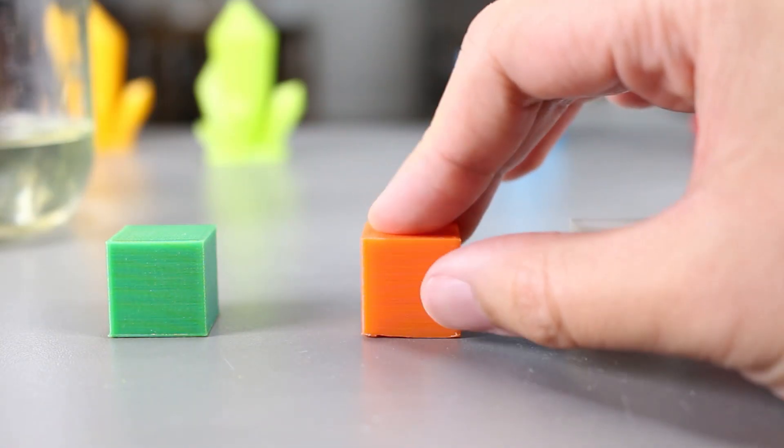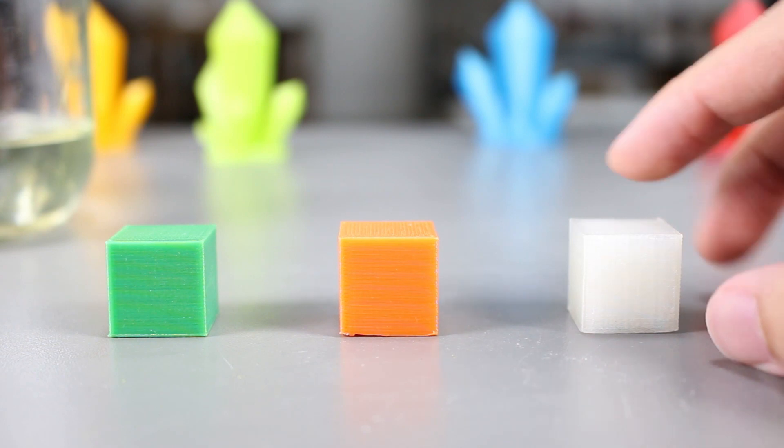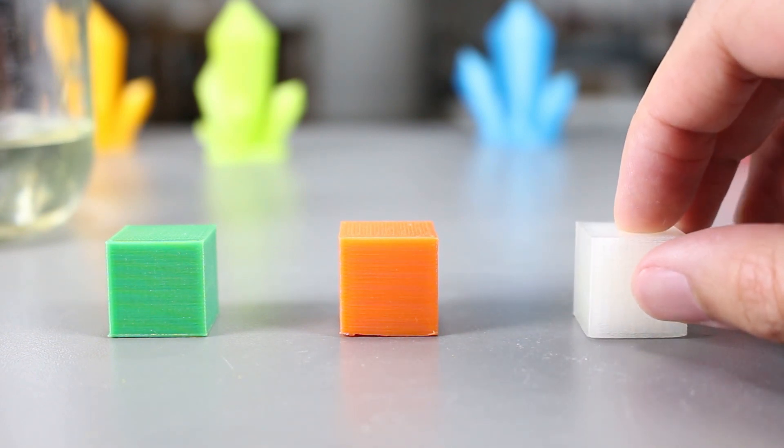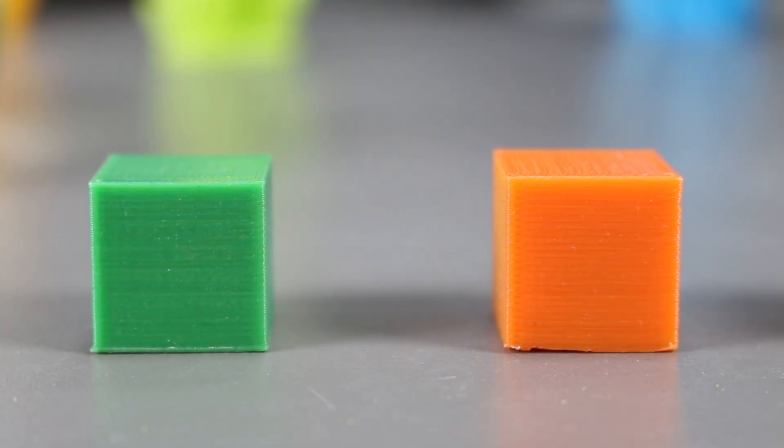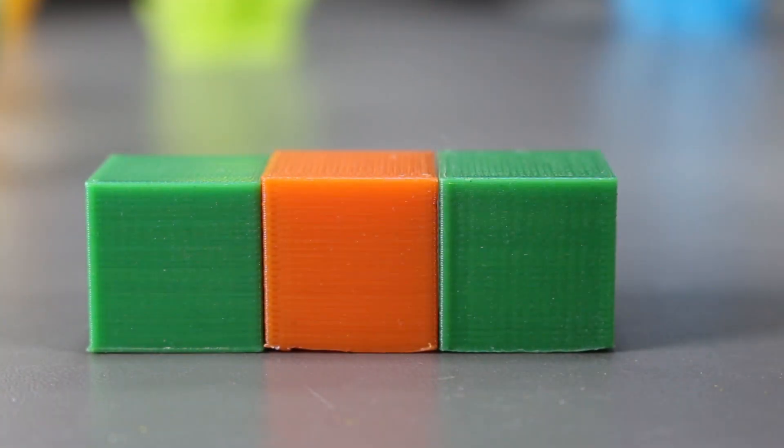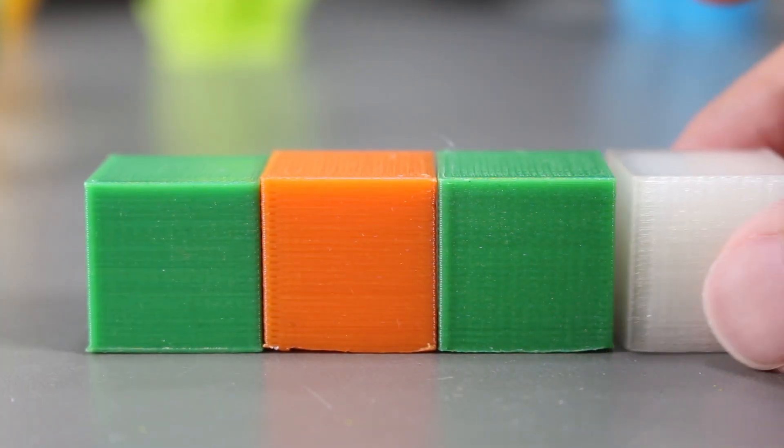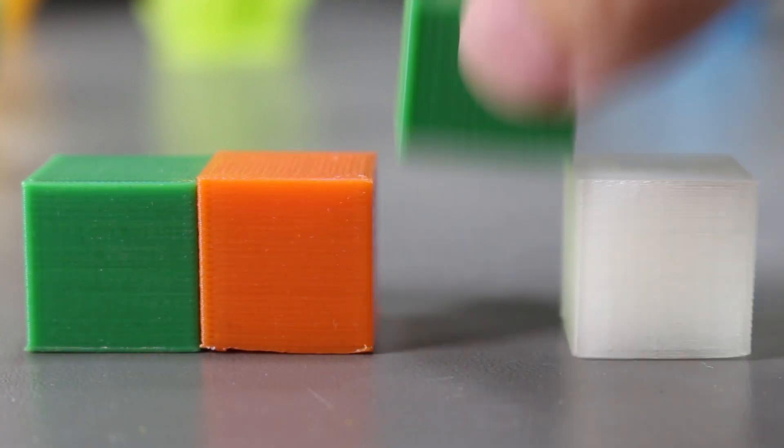Here's the other two cubes that we left in the bleach. I thought different filament colors will actually make a slight difference but they are actually completely identical right here. Here is the green cube that wasn't exposed to bleach for comparison. They all look completely the same.